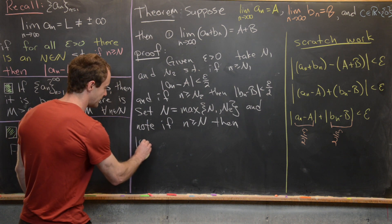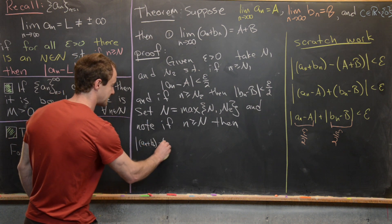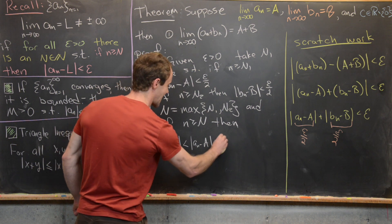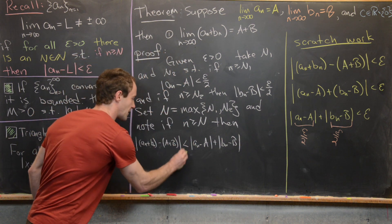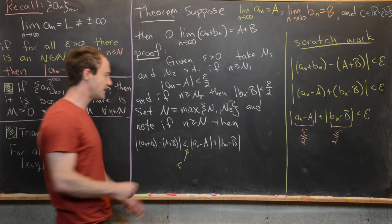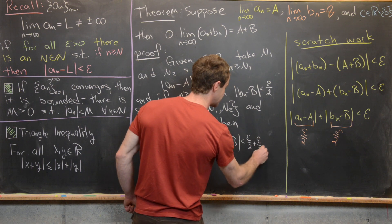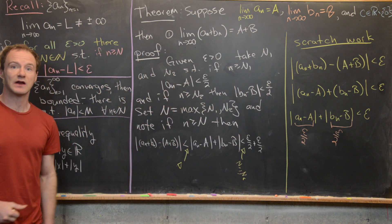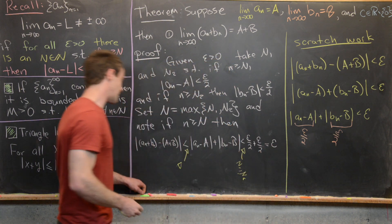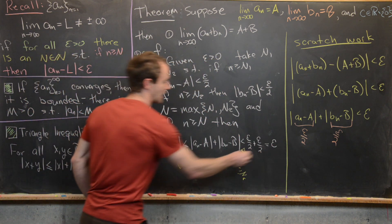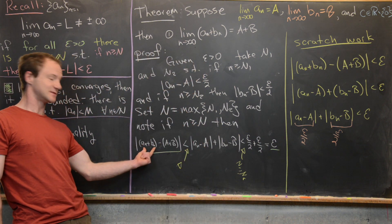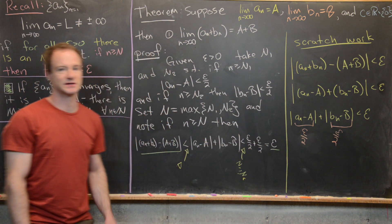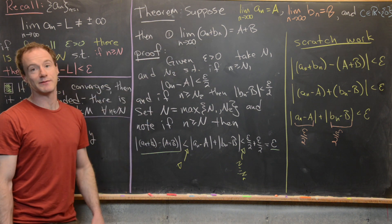Then |aₙ + bₙ − (a + b)| ≤ |aₙ − a| + |bₙ − b| by the triangle inequality, which is less than epsilon/2 + epsilon/2 = epsilon by our choice of N1 and N2. Looking at the extreme left and right sides, we've shown the sum of these terms minus the sum of the limits is less than epsilon — exactly what's needed.